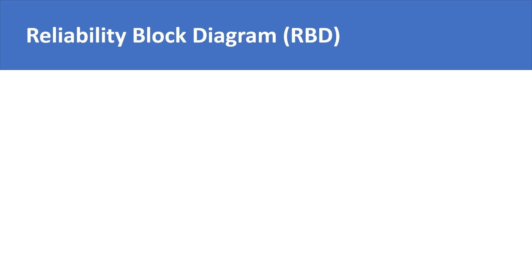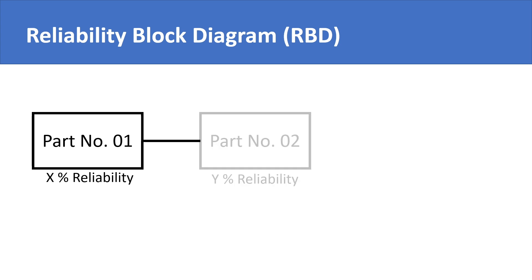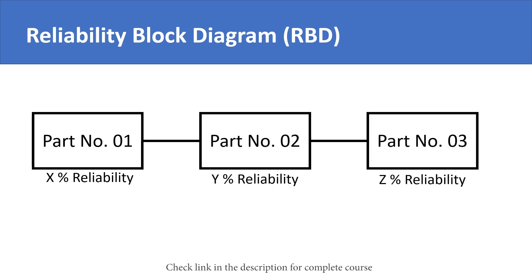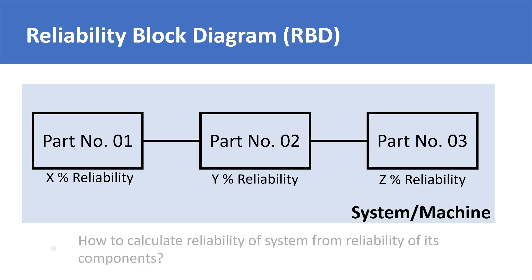The block diagram itself is not at all difficult. As the name suggests, it is simply a diagram of connected blocks, where each block represents a part or component of a machine or system, while the diagram as a whole represents the machine itself. The diagram expresses the interconnectivity of parts inside the machine, which decides how the combined or resultant or overall reliability will be calculated.